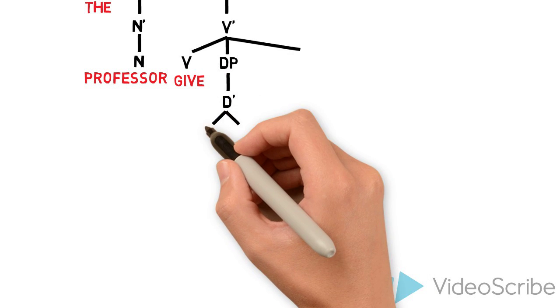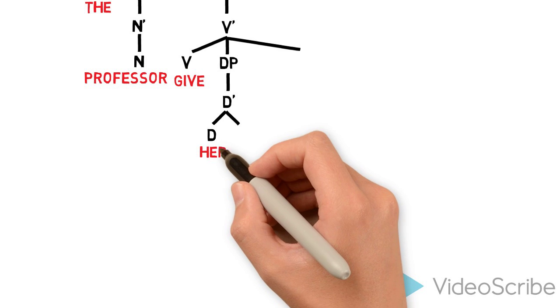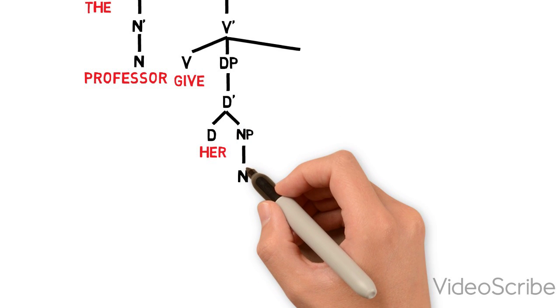The indirect object, her students, is relatively straightforward, and it is just of a D and an NP complement.